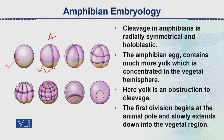So the embryo is at the eight-cell stage. The upper cells are the micromeres and the lower cells are the macromeres (vegetal cells). The micromeres start dividing more quickly as compared to the macromeres or vegetal cells.